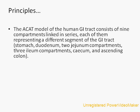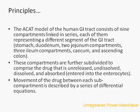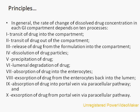The ACAT model of the human GI tract consists of nine compartments, starting from the stomach up to the colon. These compartments are further divided based on the drug state: dissolved, undissolved, unreleased, or absorbed. Movement of drug between sub-compartments is described by a series of differential equations. In general, the rate of change of dissolved drug concentration in each GI compartment depends on ten processes.